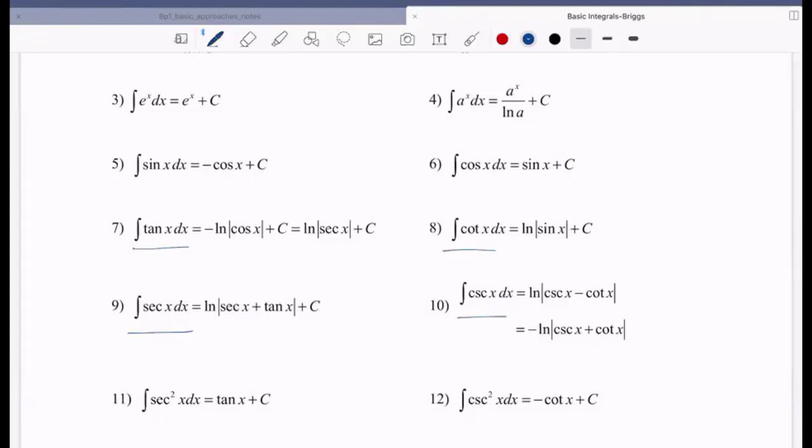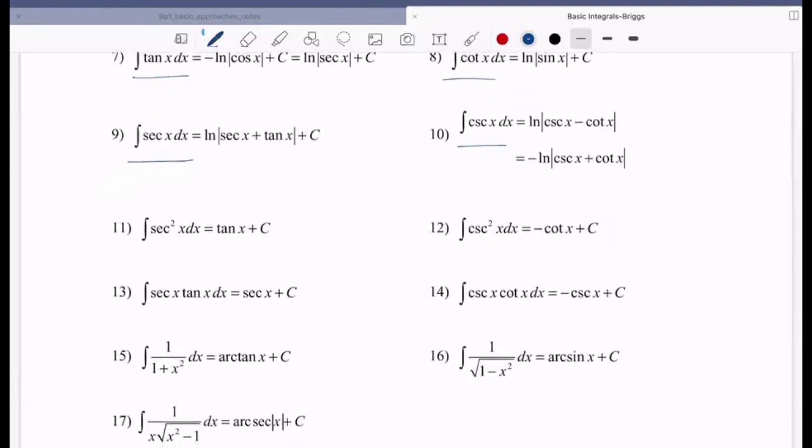These were reviewed in an earlier video. So we also have our integrals of things like 1 over 1 plus x squared is arc tan x, 1 over the square root of 1 minus x squared is arc sine x, and the integral of 1 over x times the square root of x squared minus 1 is arc secant of the absolute value of x.